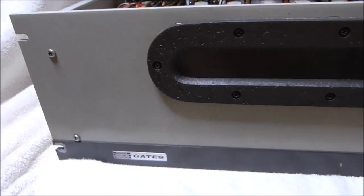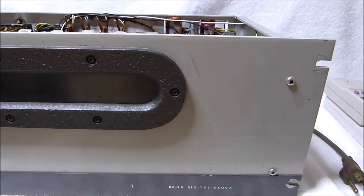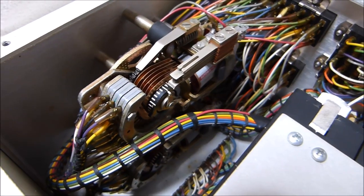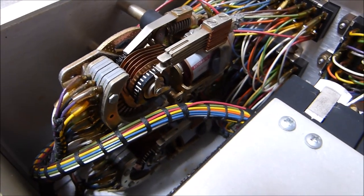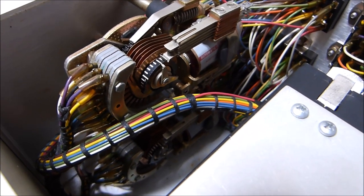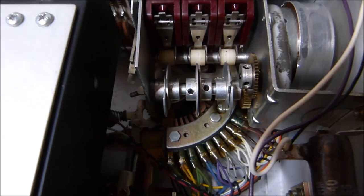This absolute beast in front of me is the Gates model DC10 digital clock. It's an electromechanical clock based around stroger switches which were used in telephone exchanges as well as niche applications like this.